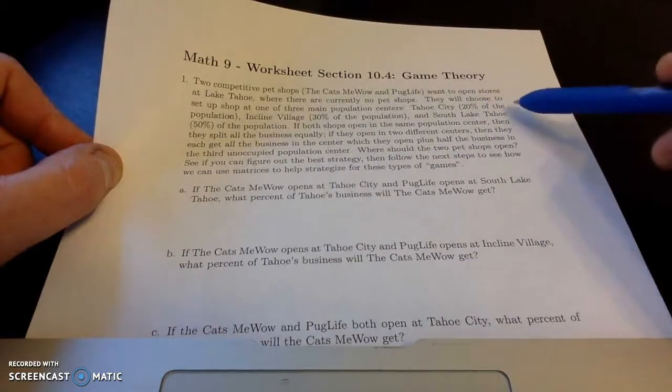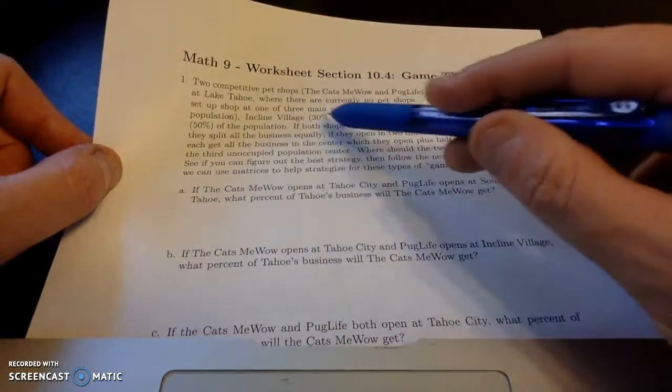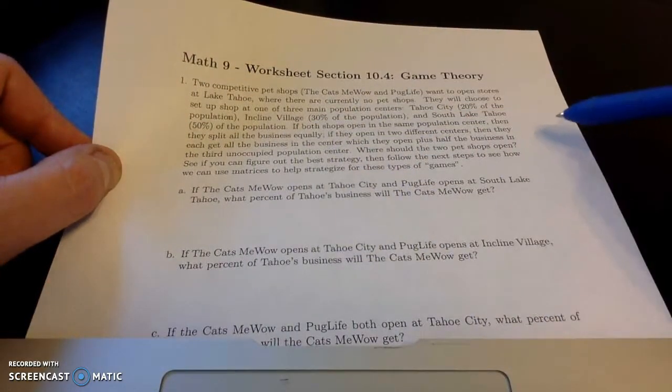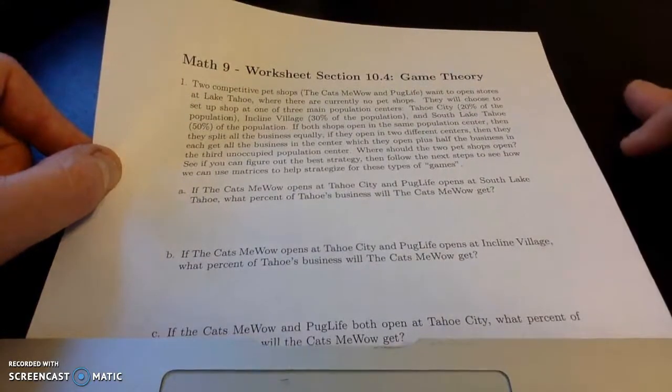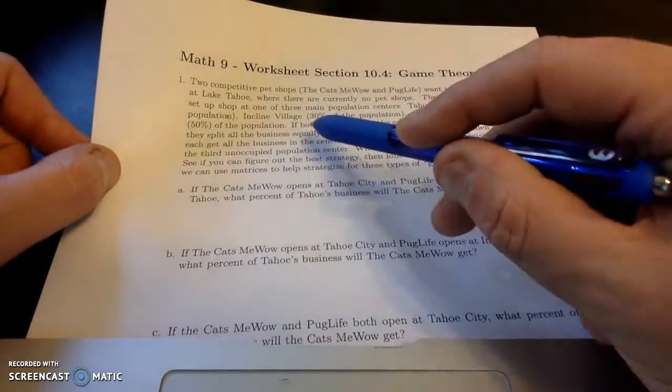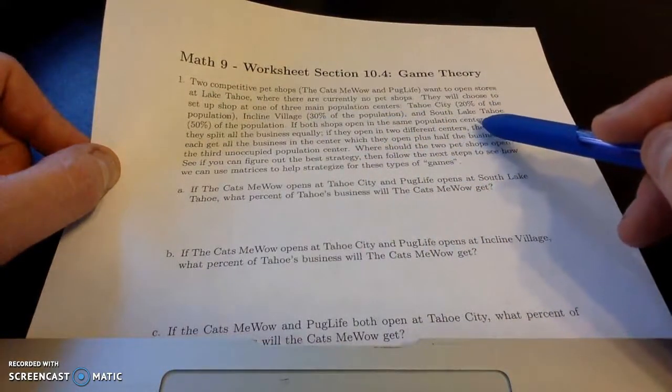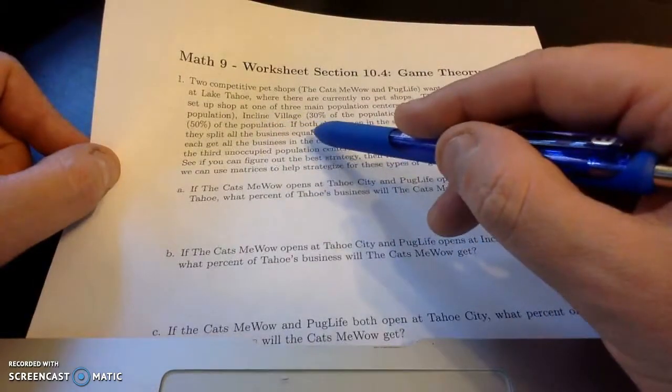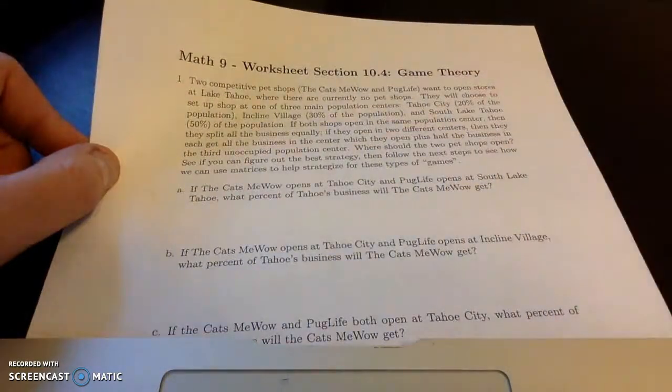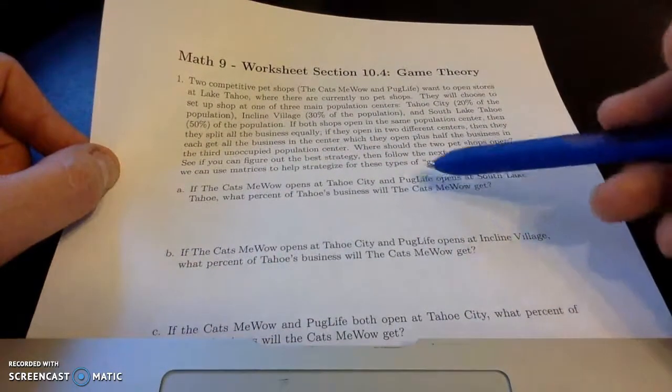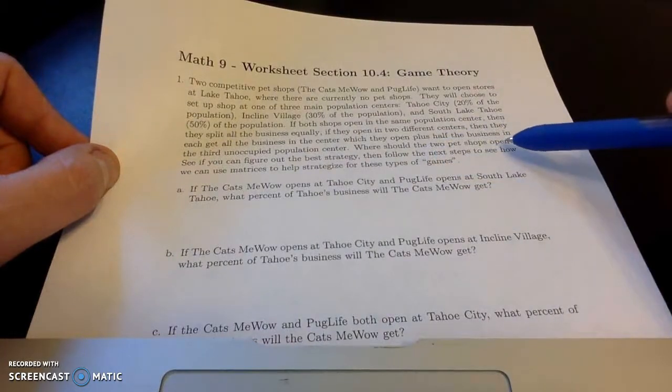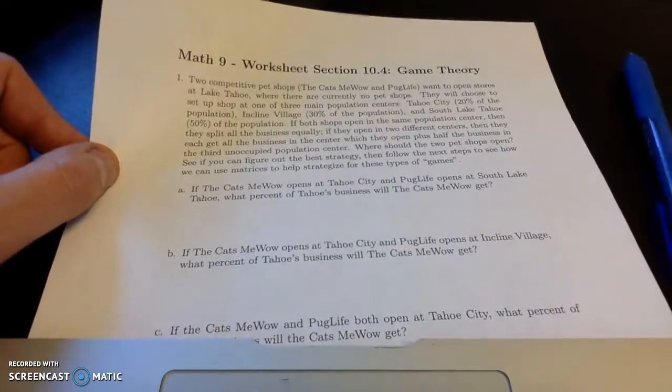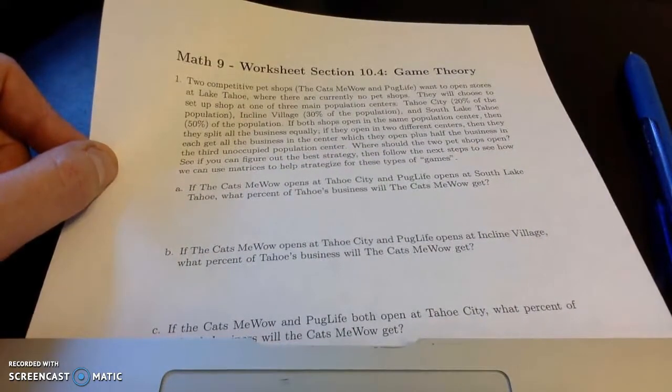Let's suppose they would choose to set up shop at one of three main population centers: Tahoe City, which has 20% of Tahoe's population; Incline Village, 30% of the population; and South Lake Tahoe, 50% of the population. All these numbers are blatantly made up, by the way. But we're also going to assume if both shops open in the same population center, if they both open in, say, Tahoe City, then they're going to split all the business equally.